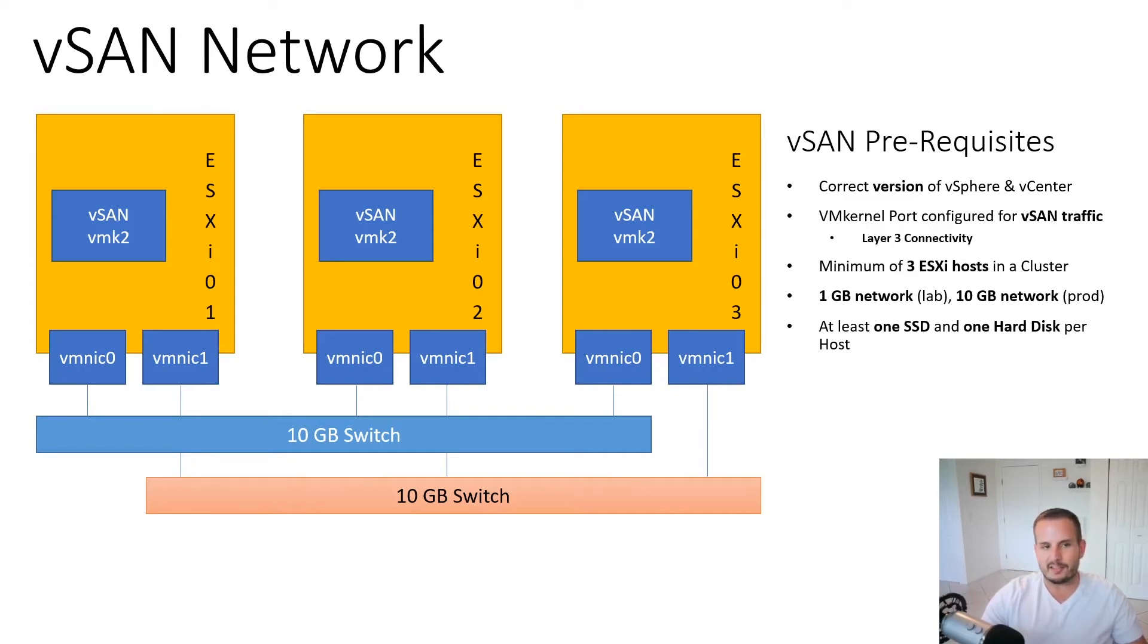There's actually a great hands-on lab, I'll include a link in the comments so you can take a look at that, that shows you how to configure these prerequisites for the networking side of the house for vSAN. There's a minimum of three ESXi hosts in a cluster. The network requires either 1 gig or 10 gig. 1 gig is recommended for lab or development environments, whereas 10 gig is going to be your production environment. Then there's a requirement for at least one SSD and one hard disk per host. This could be one SSD plus one SSD per host, so note that it's just one and one.